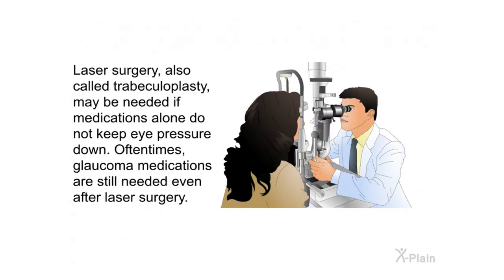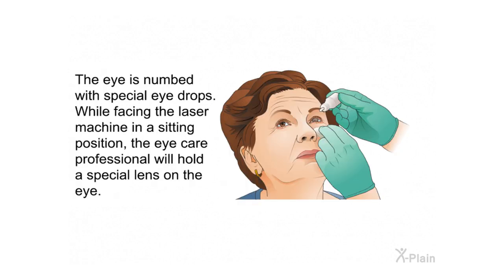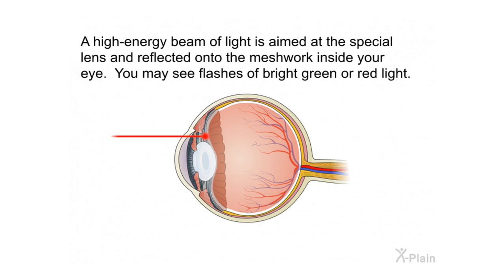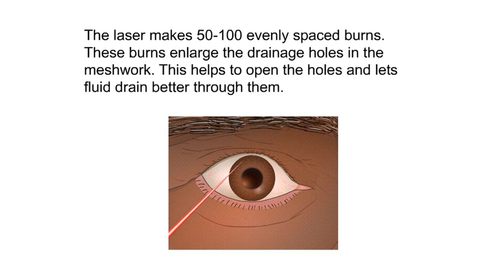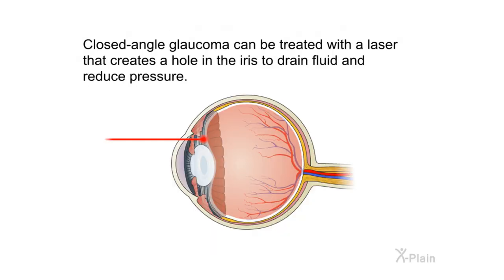Laser surgery, also called trabeculoplasty, may be needed if medications alone do not keep eye pressure down. Glaucoma medications are often still needed even after laser surgery. The eye is numbed with special drops, and while the patient sits facing the laser machine, the eye care professional holds a special lens on the eye. A high-energy beam of light is aimed at the meshwork inside the eye. The laser makes 50 to 100 evenly spaced burns that enlarge the drainage holes, letting fluid drain better. Closed-angle glaucoma can be treated with a laser that creates a hole in the iris to drain fluid and reduce pressure.